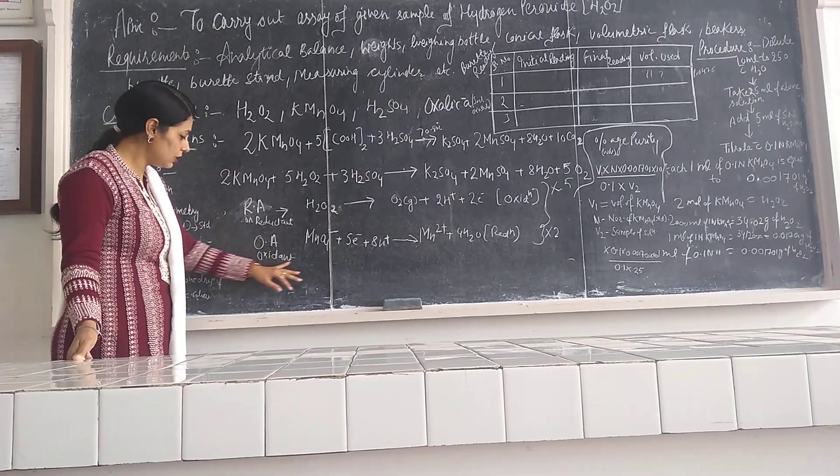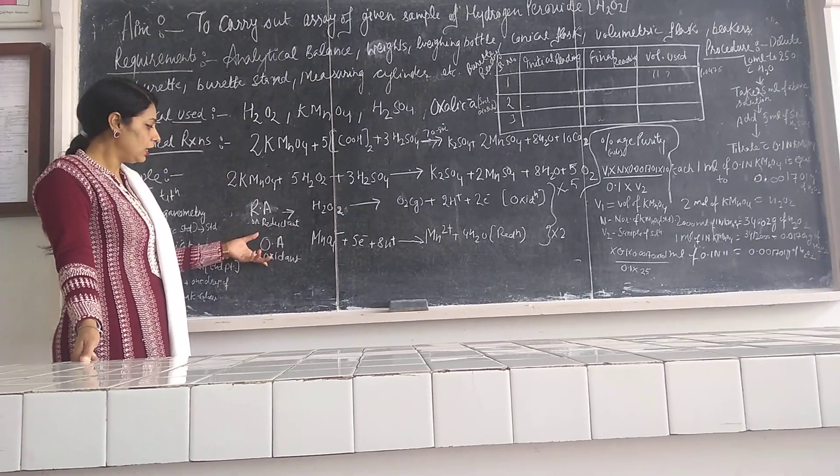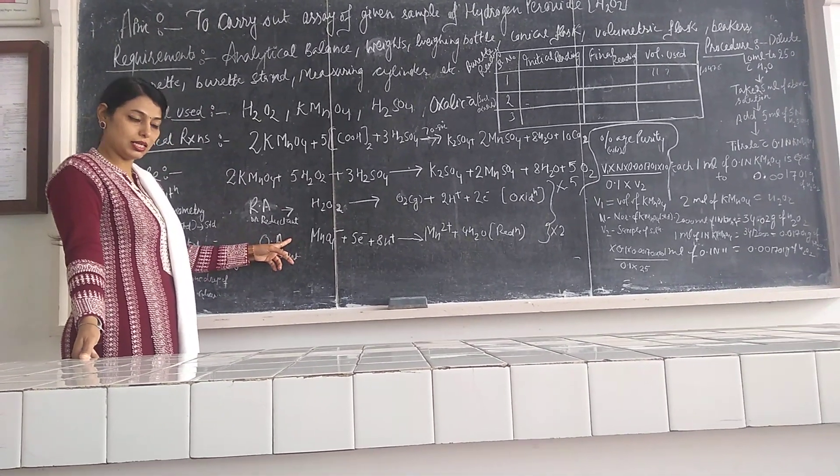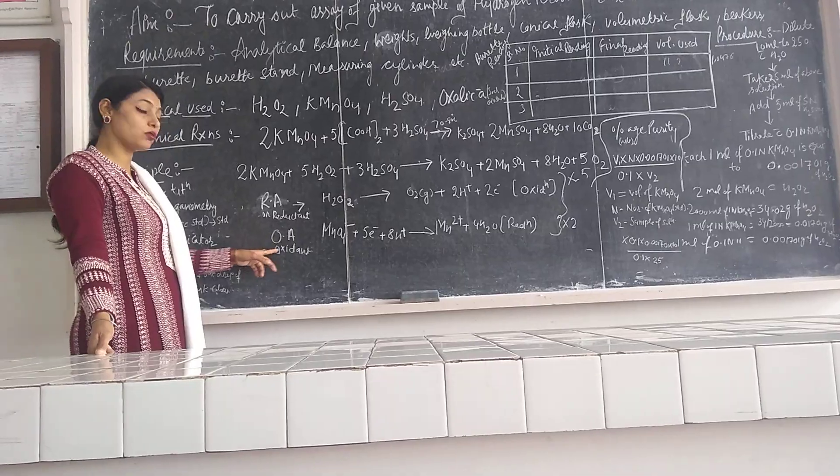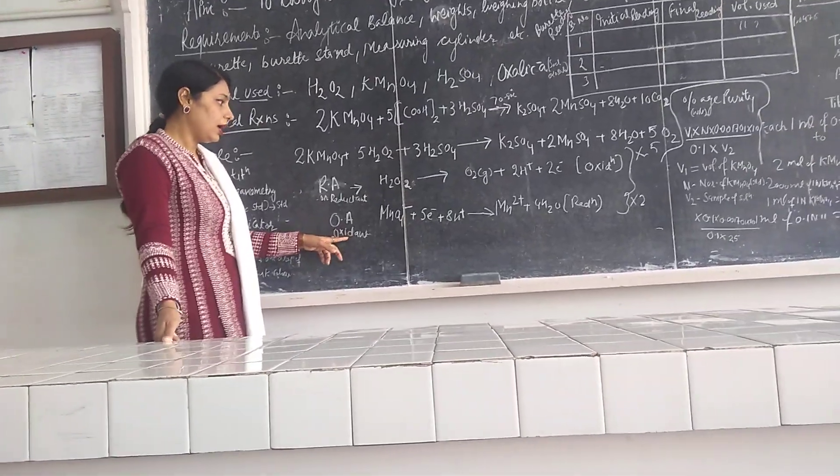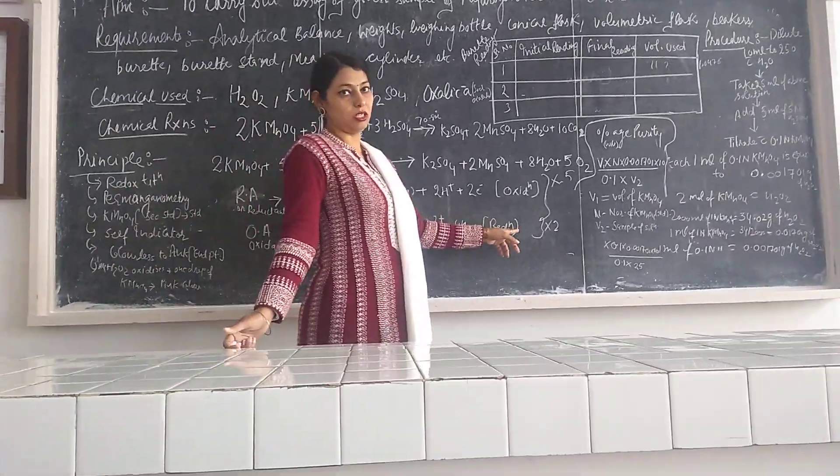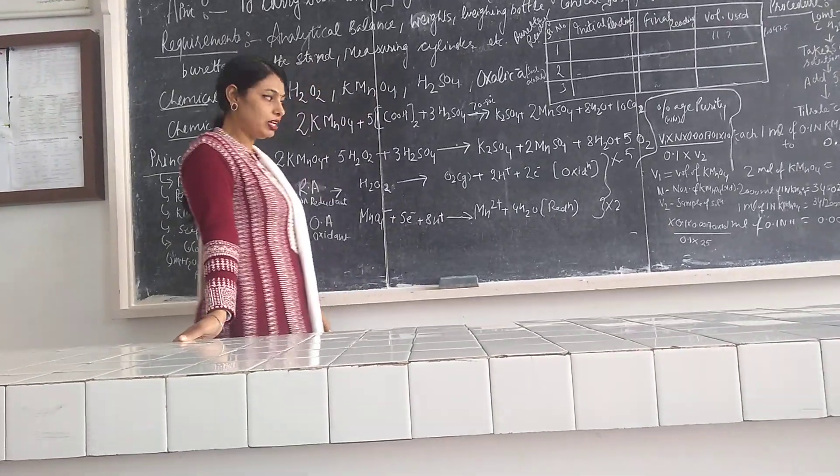On the other side, this is your KMnO4. It will act as an oxidizing agent. Oxidizing agent is also known as oxidant and it undergoes reduction. Reduction is your gain of electrons.